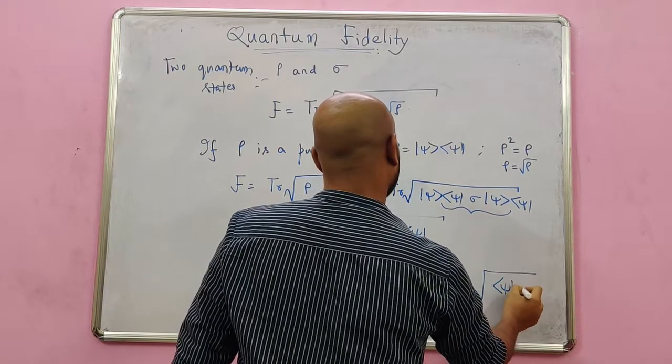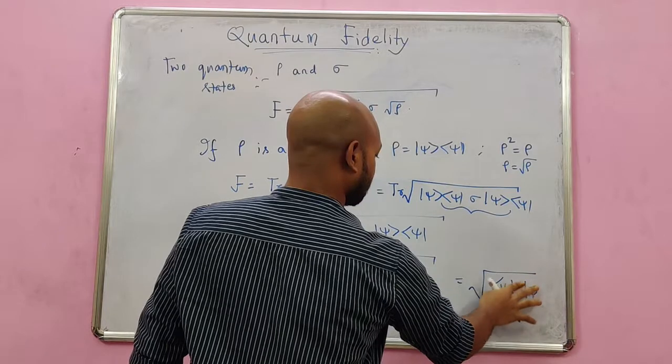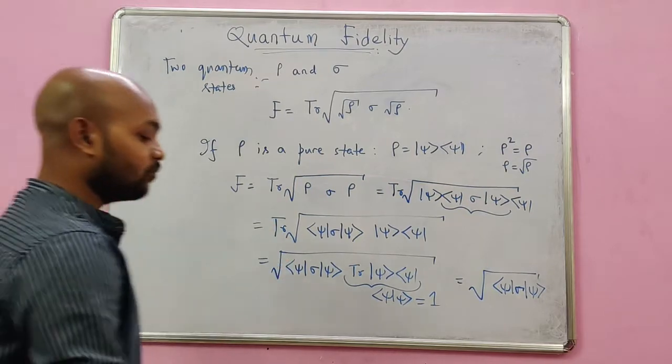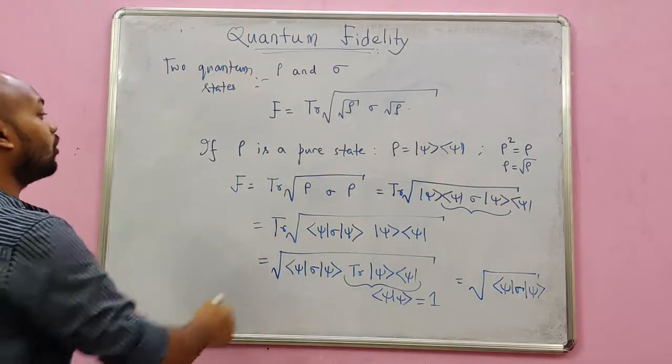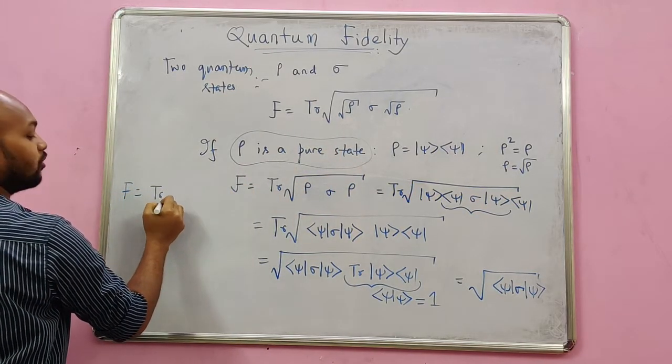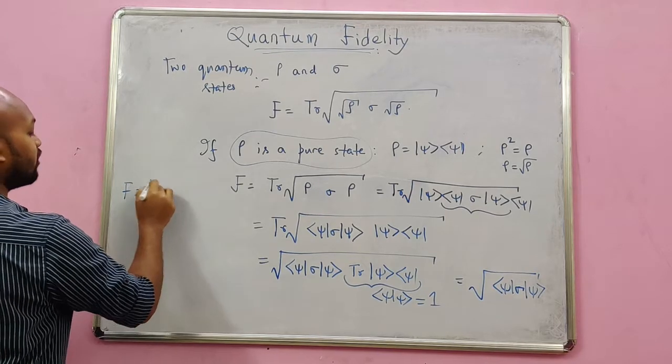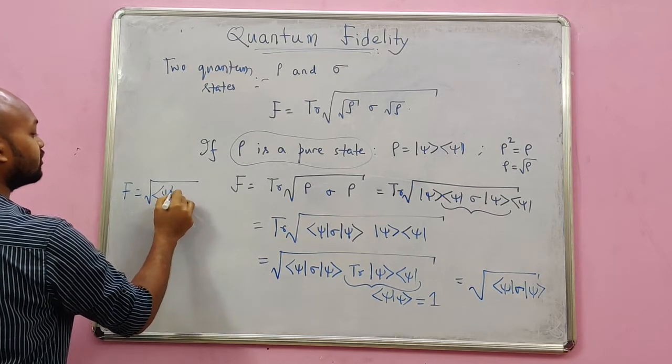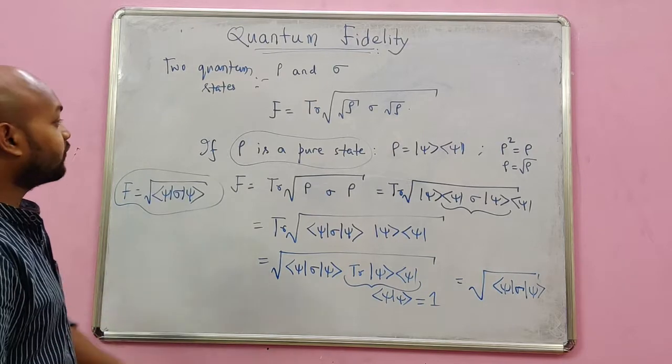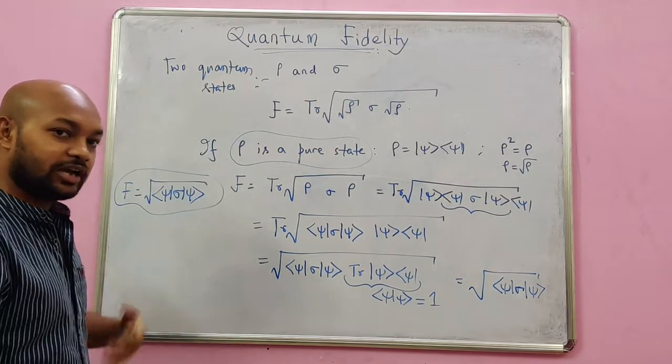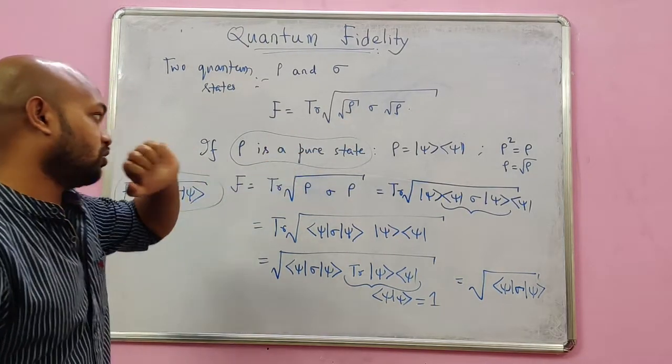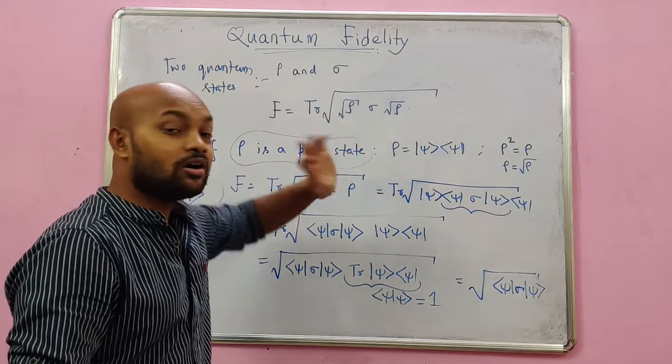And finally we are left with square root of ⟨ψ|σ|ψ⟩. So this is the final formula. That means if rho is a pure state, then our fidelity formula becomes square root of ⟨ψ|σ|ψ⟩, where |ψ⟩ makes the ρ. Like I promised you before, this formula would be looking simpler and simpler as you put more and more conditions in here. This is when rho is a pure state. Let's see what happens when sigma also becomes a pure state.